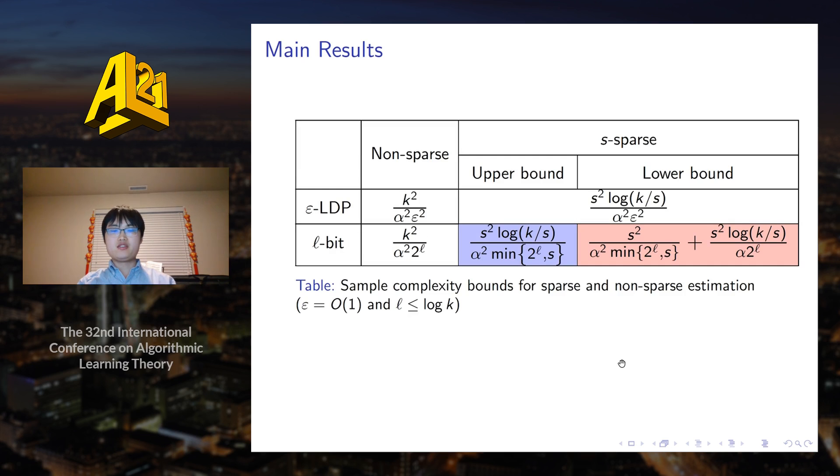For communication, we obtained a similar upper bound to the ones we obtained for LDP. The lower bound is not tight. However, it is optimal when we don't care about log factors, or it is also optimal when the accuracy parameter alpha can be viewed as a constant. The main message of our result is that when data is sparse, we need less samples to learn the distribution with desired accuracy.